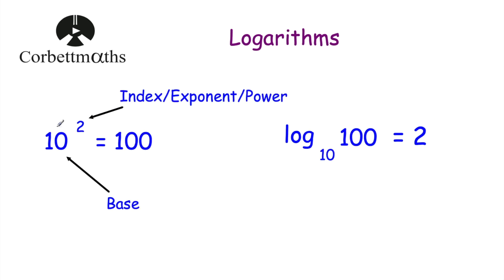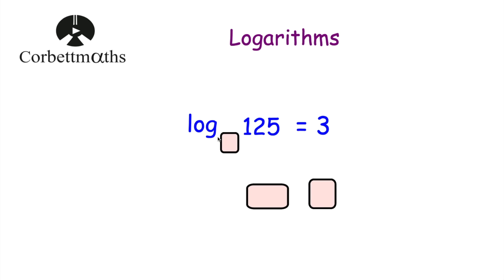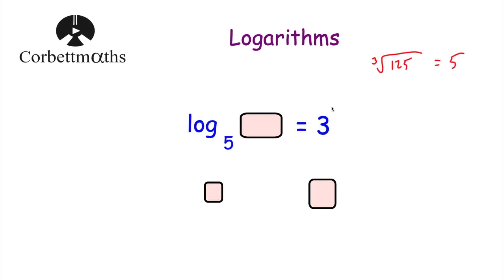Previously we looked at index form such as 10 squared equals 100, where 10 is the base, 2 is the power, and 100 is the answer, so log to base 10 of 100 equals 2. Sometimes values are missing: for instance log to base 5 of 125 equals 3 because 5 cubed is 125. But if the base is missing — log to base a of 125 equals 3 — we work out the cube root of 125, which is 5, so the base is 5. Or if the value 125 is missing, we just do 5 cubed to get 125.